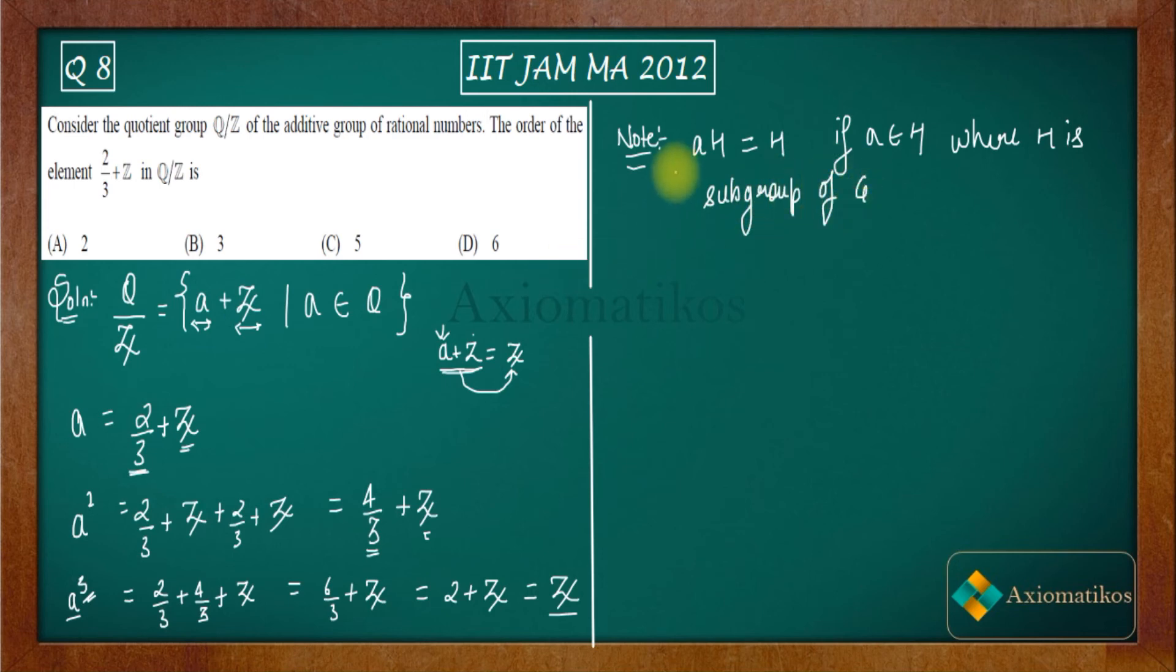Now what is note number two for you: whenever you add two subgroups, you will end up with these two subgroups adding, meaning the operation between them. Right now we have the addition operation in our hand, that's why I'm writing like this. It's a casual way, not a formal way.